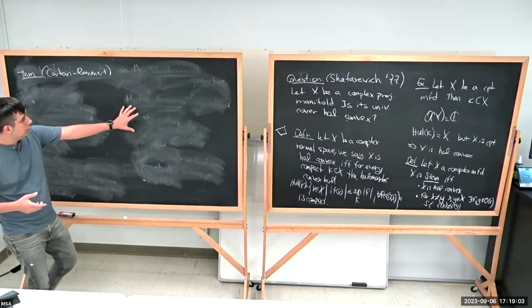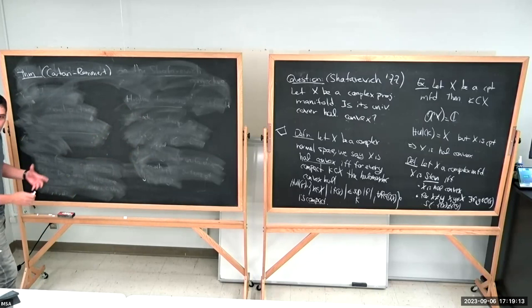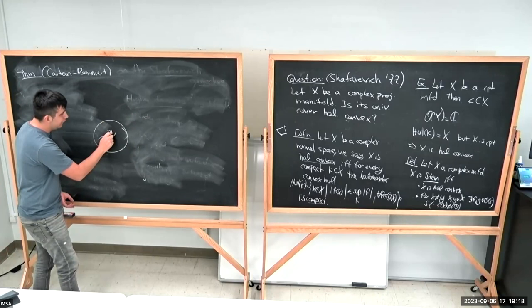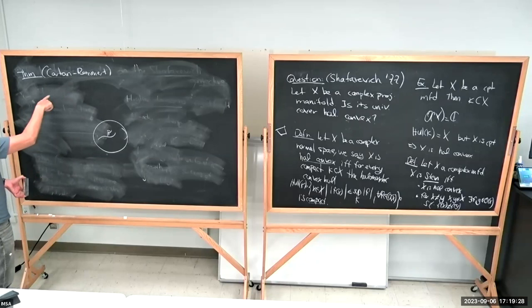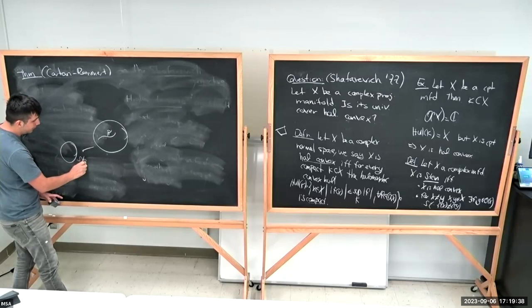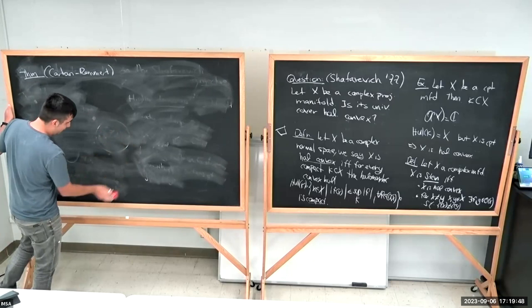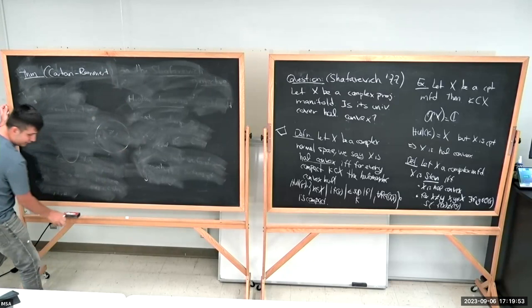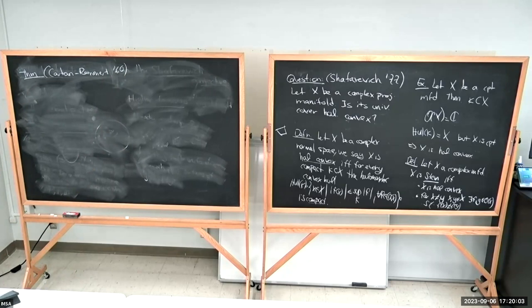There exist examples in higher dimension of universal covers that are non-Stein: Stein cannot contain compact complex submanifolds, so you cannot have something like a projective line inside a Stein space. But there exist universal covers of surfaces that contain such things. The key point is: when you have something holomorphically convex, you can contract these compact subvarieties and end up with something Stein.